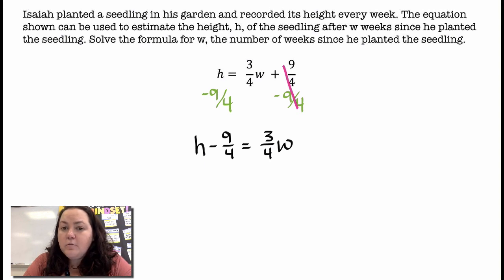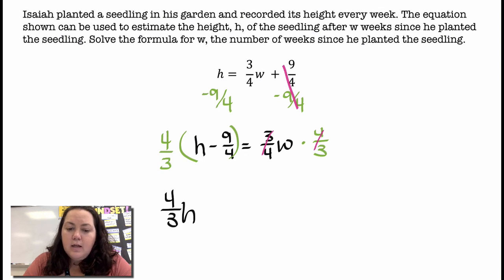So to get rid of a fraction, you multiply by the reciprocal. So I'm going to multiply both sides by 4 thirds. Okay, it cancels out there and just leaves me with w, but on this side I'm multiplying that entire side by 4 thirds. So I wrapped it in parenthesis and then I'm going to multiply each term. So 4 thirds times h would be 4 thirds h.